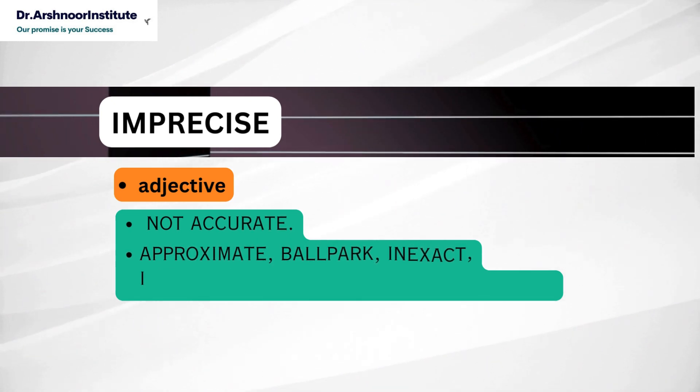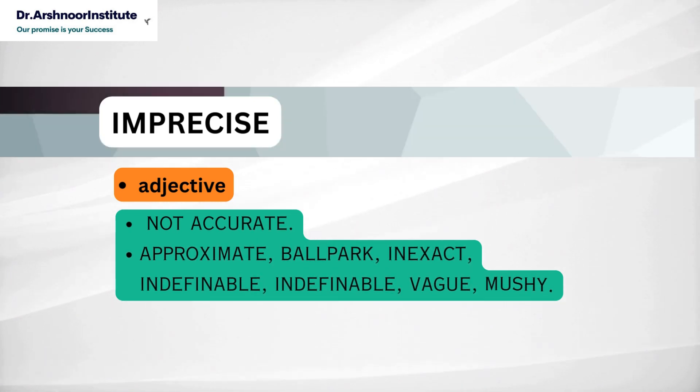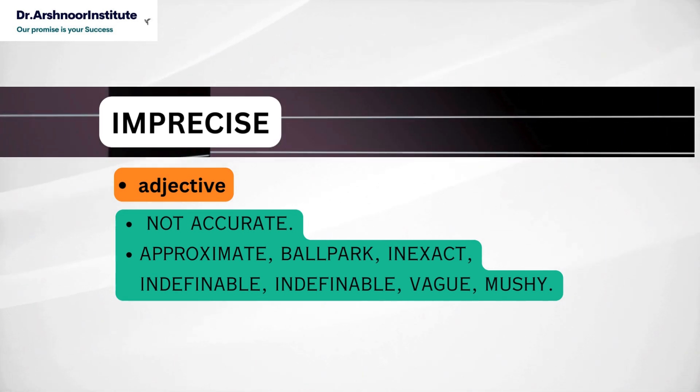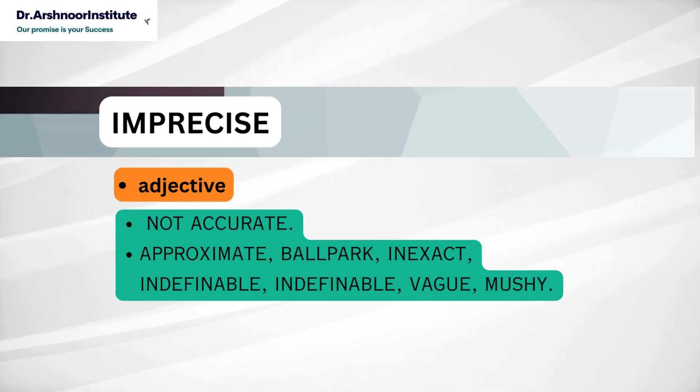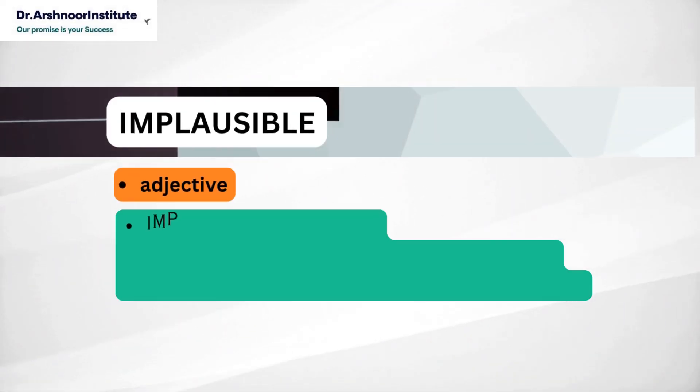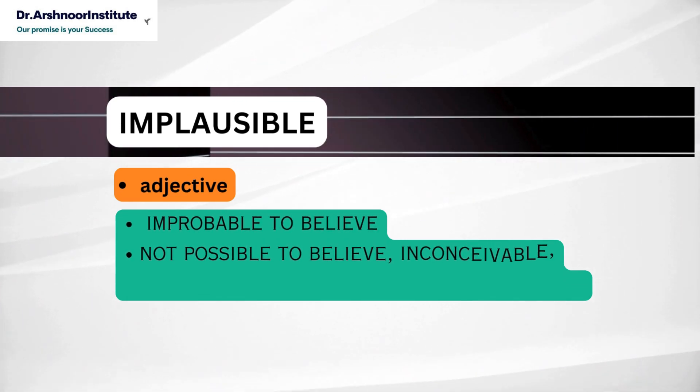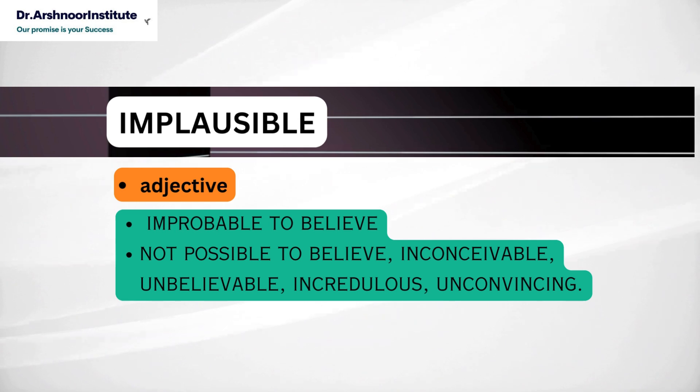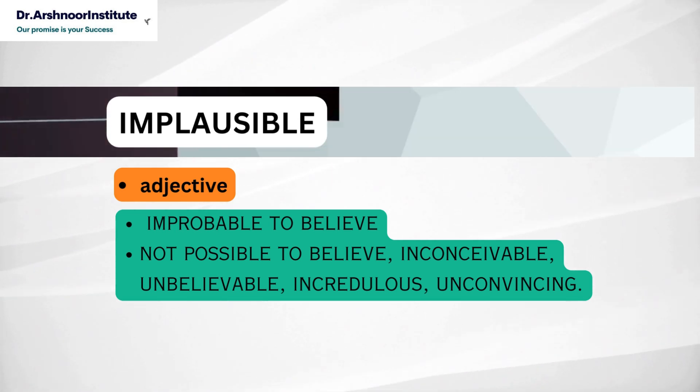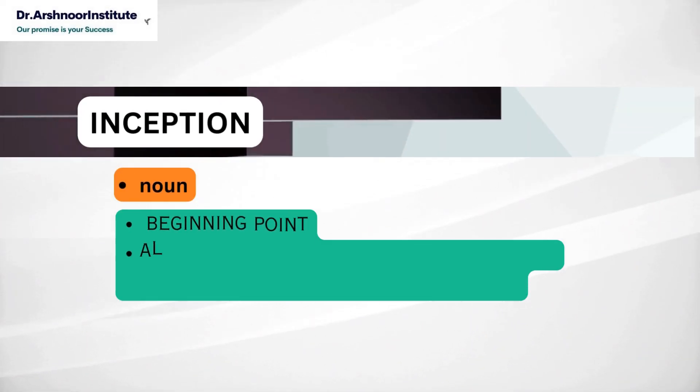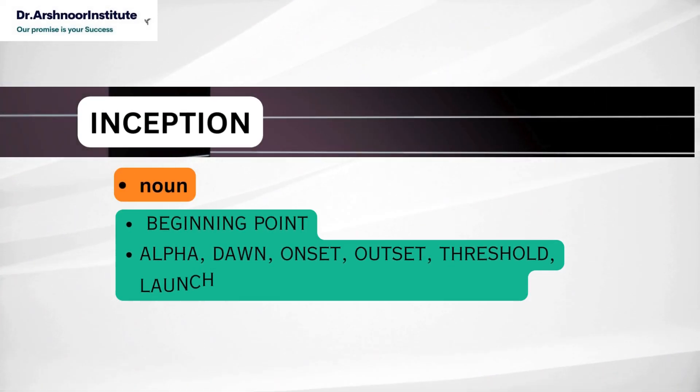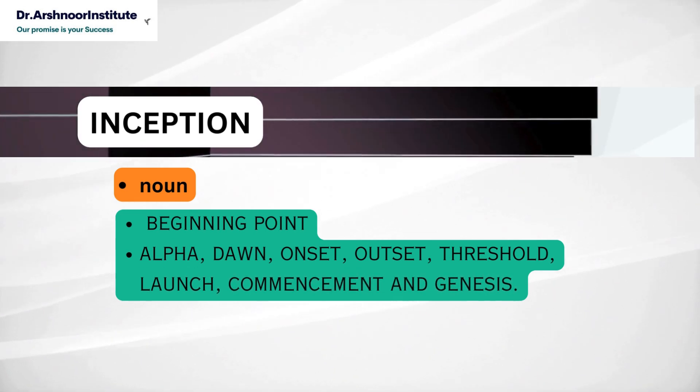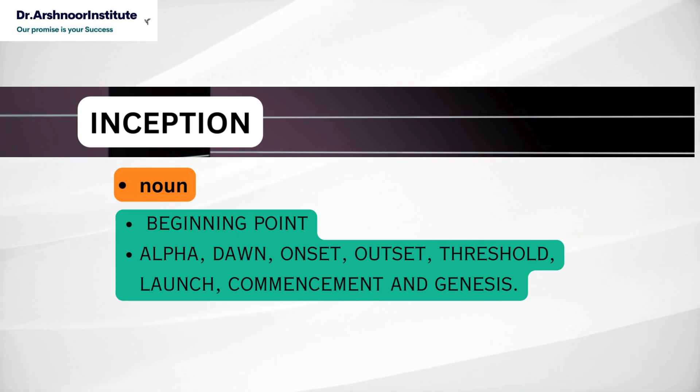Next word is imprecise. It's an adjective. It means not accurate. So we use the synonyms approximate, ballpark, inexact, indefinable, vague, mushy. Next word is implausible and this is an adjective. It means improbable or not possible to believe: inconvincible, unbelievable, incredulous, unconvincing. Next word is inception. It's a noun and it means beginning point and the synonyms are alpha, dawn, onset, outset, threshold, launch, commencement, and genesis.